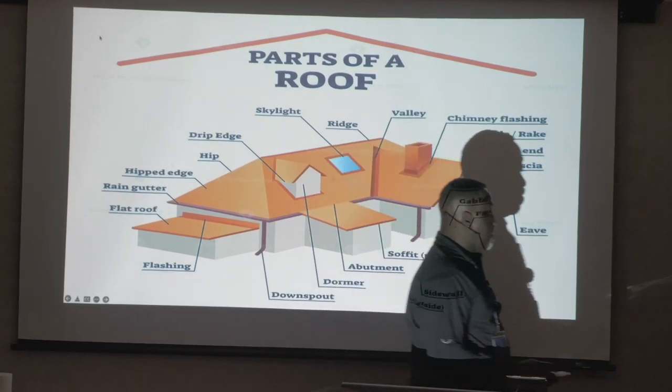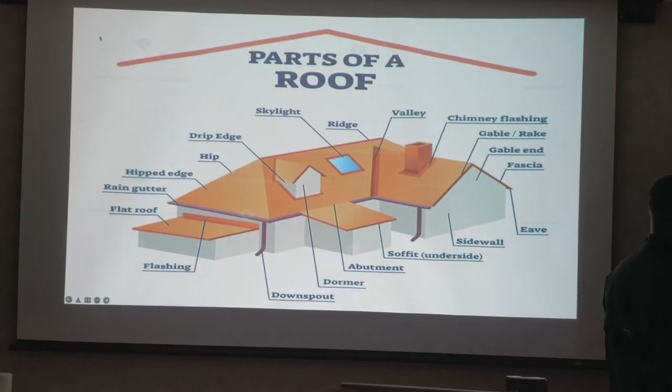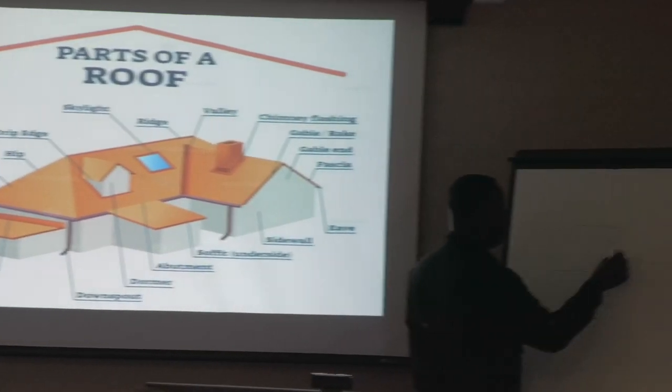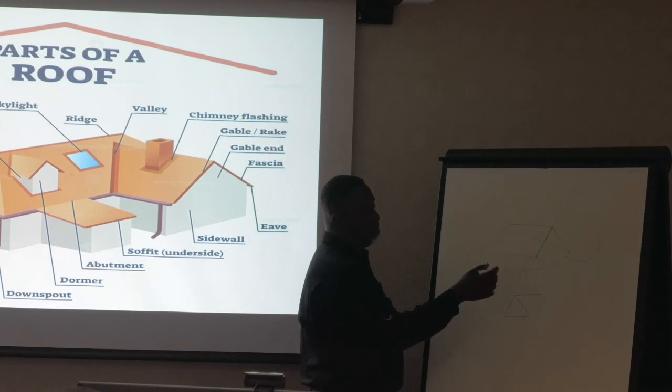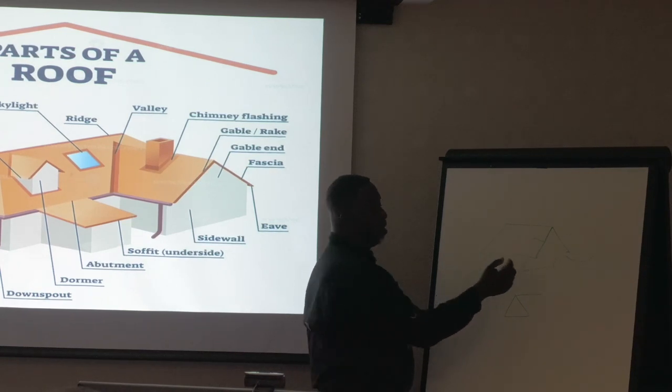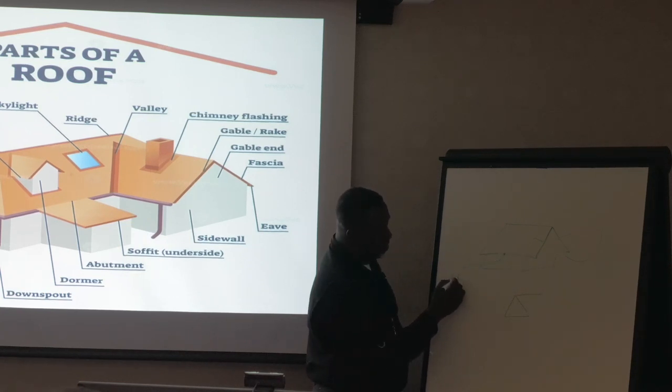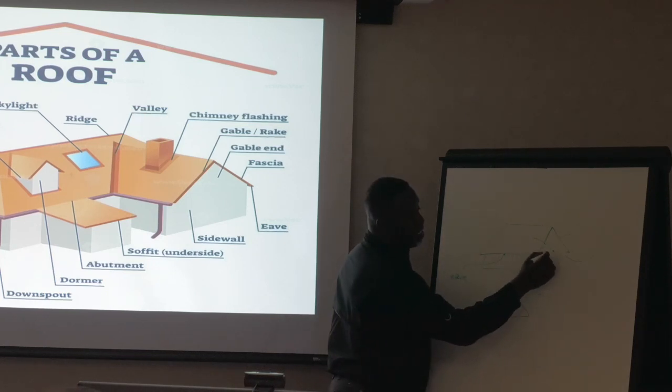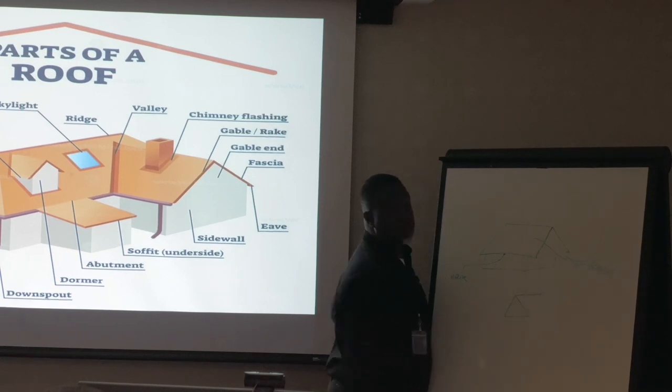What you're referring to as the rake, which I hate the fact that they do this. So what is a gable or a gambrel? This side of the roof, this edge, this roof edge, is considered an eave. This roof edge is considered a rake. Tell me what's the difference.